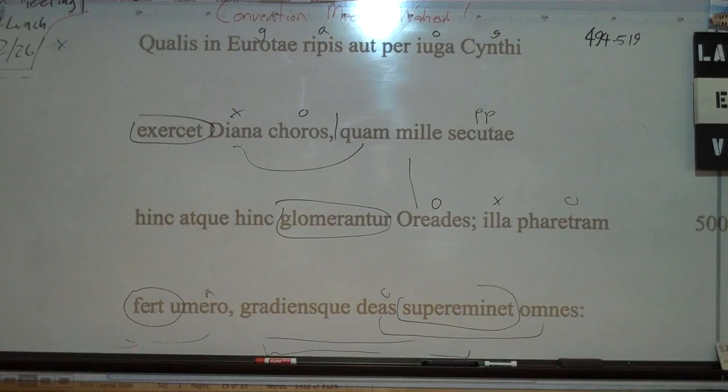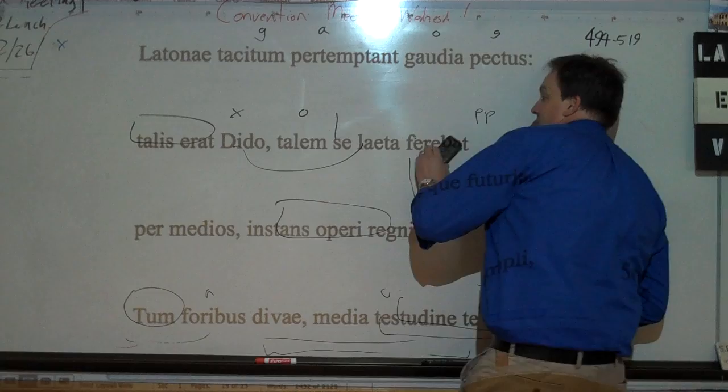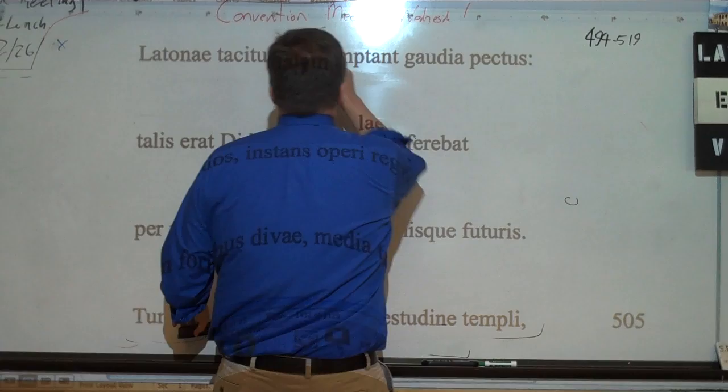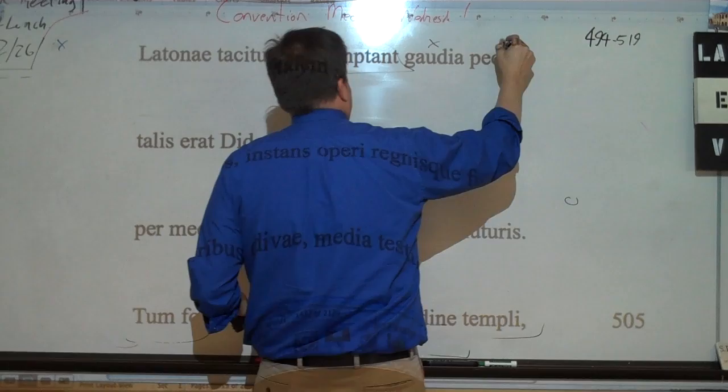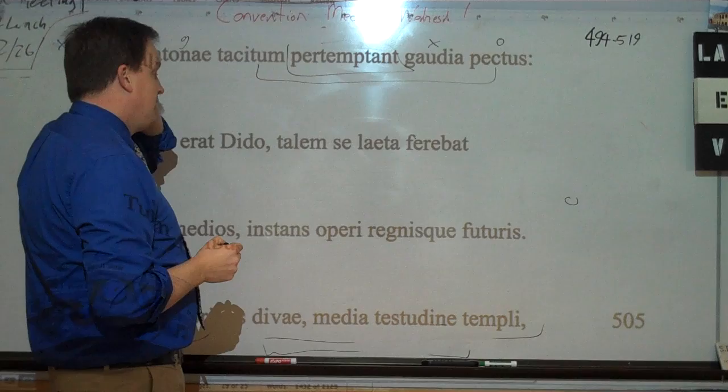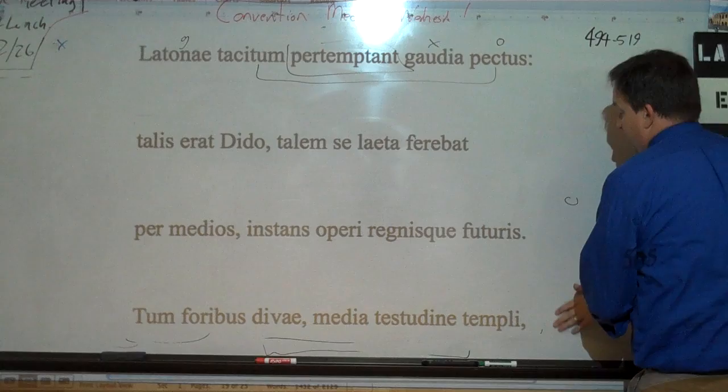All right, and then we have here, we have one more little line and then the simile ends. Pectus is your subject. No, actually, pectus here is neuter. Pectus is neuter. Gaudia is neuter. And the question is, what's the subject of the verb? Now they're right next to each other. Now Virgil probably did that on purpose. I guess he does everything on purpose. But he's doing that here to try to tell you what the cases are. So gaudia looks like it's nominative because this is plural. Pectus then would be accusative. Tacitum is going with pectus. Latona, Latoni, probably going with pectus as well. So the joys possess the silent heart of Latona. And this is the mother of Diana.